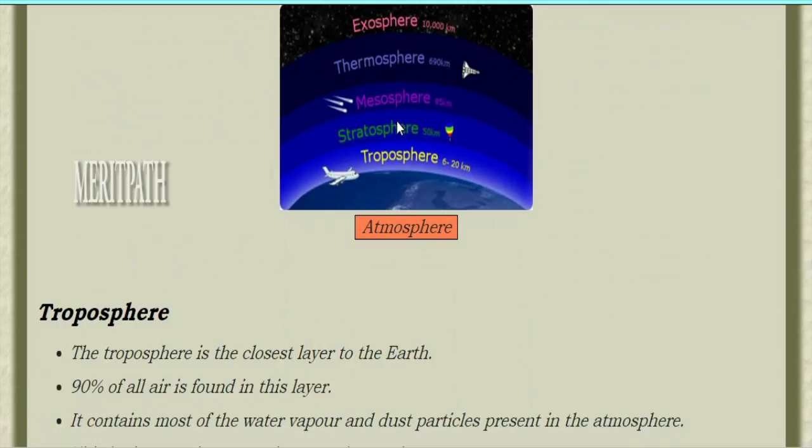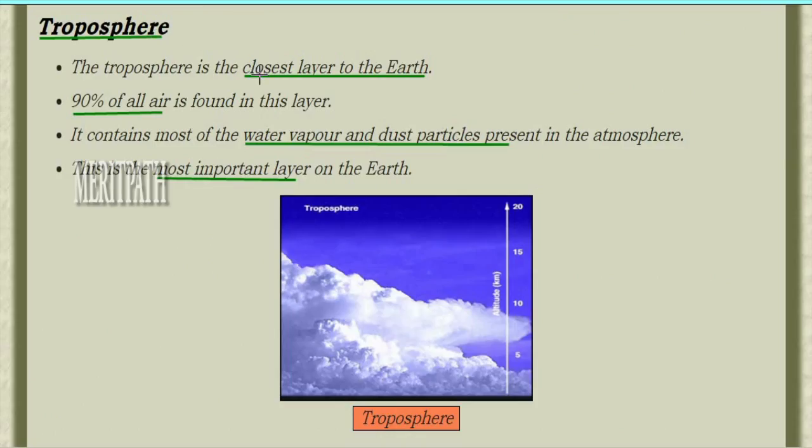The troposphere is the closest layer to Earth. 90% of all air is found in this layer. It contains most of the water vapor and dust particles present in the atmosphere. This is the most important layer on Earth.